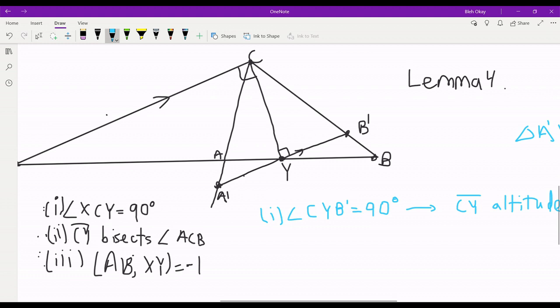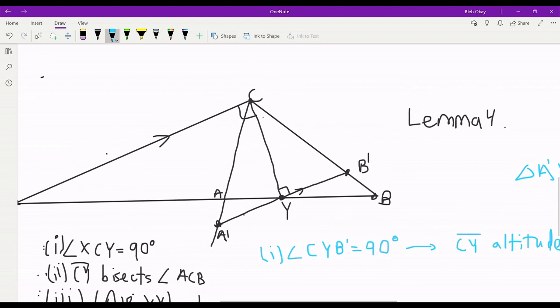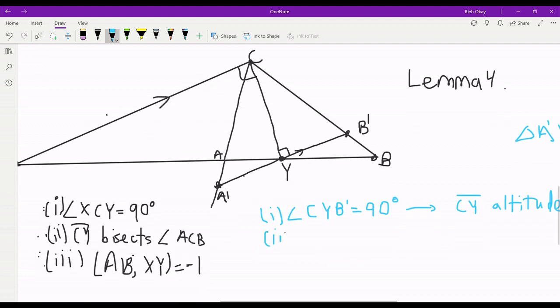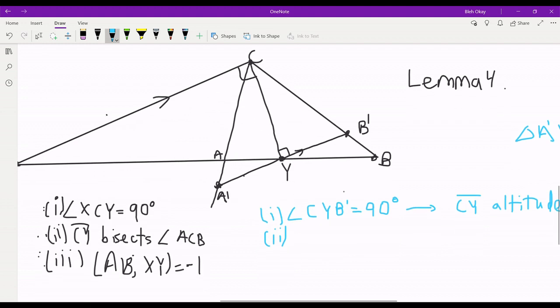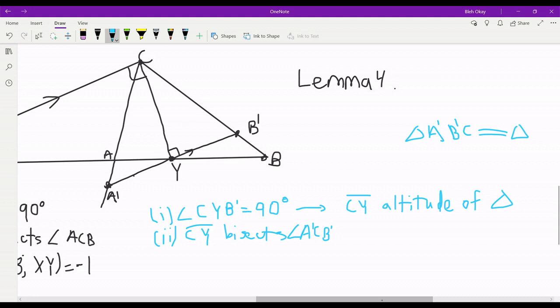The second condition: if CY bisects angle ACB, well angle ACB is the same thing as angle A prime C B prime. So we can rewrite the second condition as CY bisects angle A prime C B prime. And again, this just means that CY is an angle bisector of our triangle.